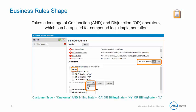For example, a complex statement can be configured using a conjunction AND followed by two disjunctions OR.